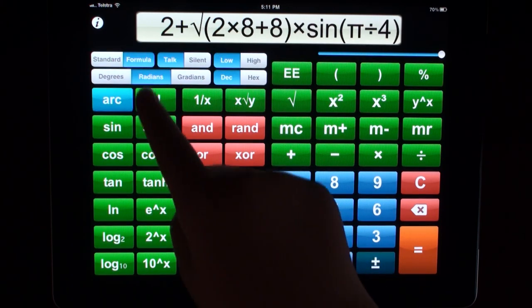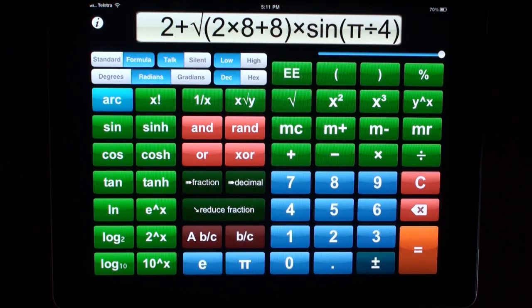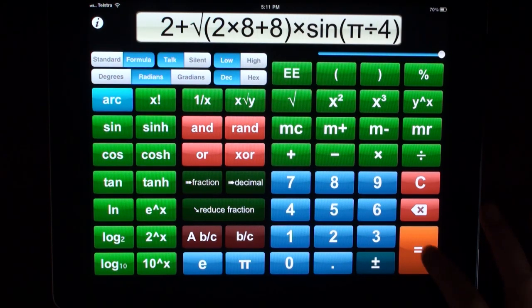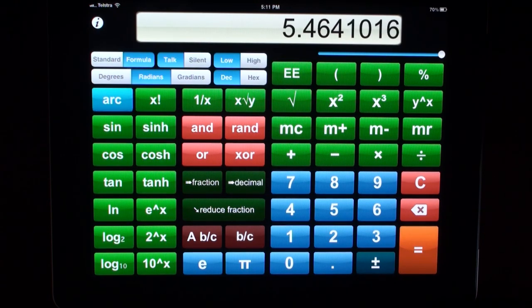Also, when your calculator is in formula mode, if you enter a mathematical expression and press the equals button, it will automatically apply the appropriate operator precedence rules, also known as BODMAS or PEMDAS. Equals, 5.4641016.